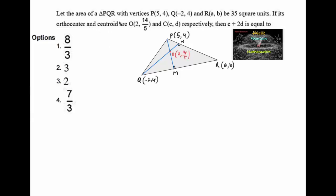Given the area of triangle PQR with vertices P, Q, and R is 35 square units. The orthocenter is given as (2, 14/5) and the centroid is given as (c, d). We need to find c plus 2d.